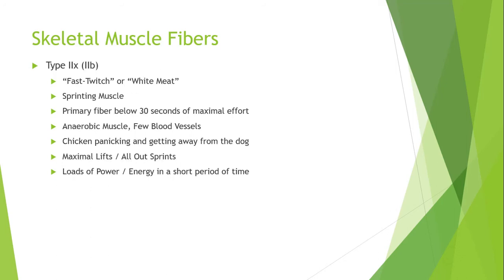At the opposite extreme, we have Type 2X muscle fiber, also known as Type 2B. This is fast twitch muscle fiber — the white meat, the breast meat. This is your sprinting muscle, the primary muscle fiber used below 30 seconds of maximal effort: your all-out sprints, your maximal lifts. This is anaerobic muscle fiber, meaning it produces a lot of energy without oxygen. It has fewer blood vessels than Type 1, which is why it's white versus dark.